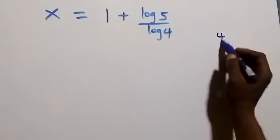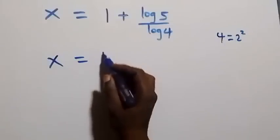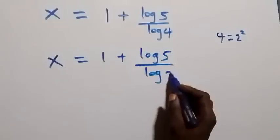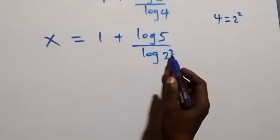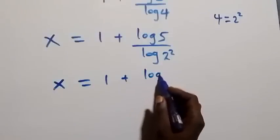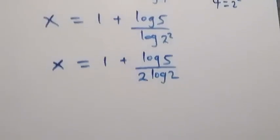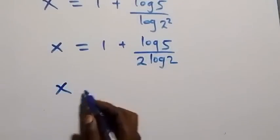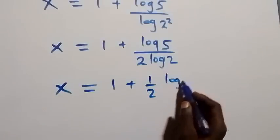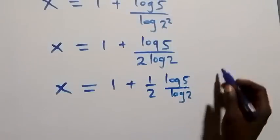Now we write 4 as 2 squared, so x equals 1 plus log 5 over log(2 squared). Applying the power law again, the 2 comes down, giving x equals 1 plus log 5 divided by 2 log 2, which we can also write as x equals 1 plus half times (log 5 over log 2).